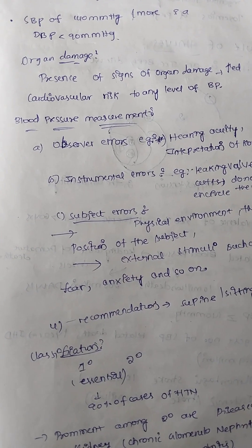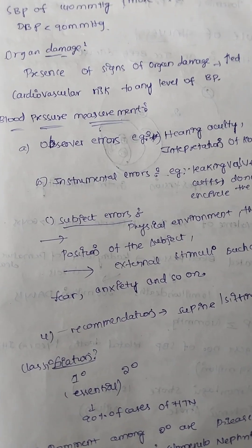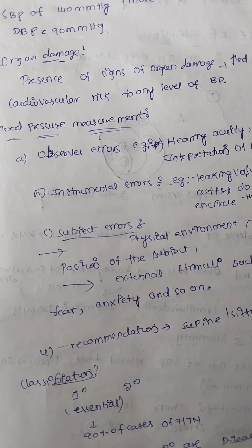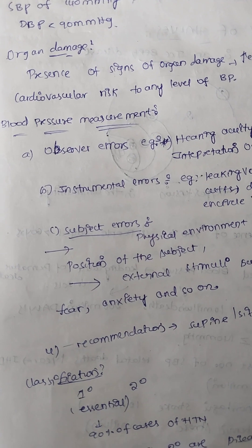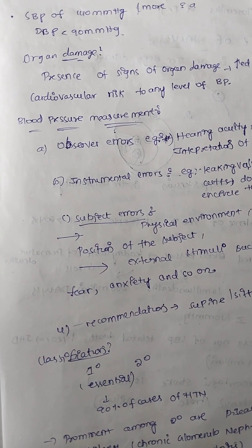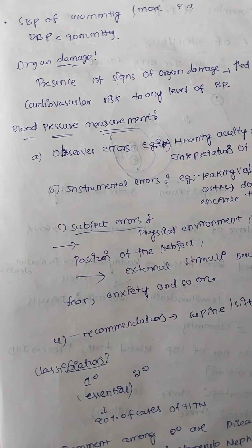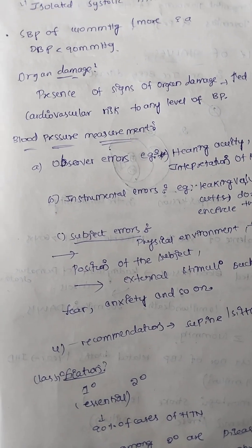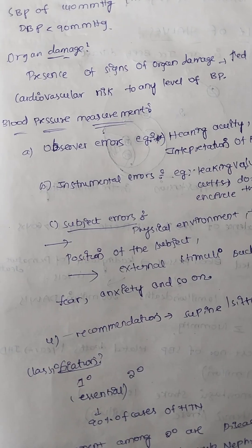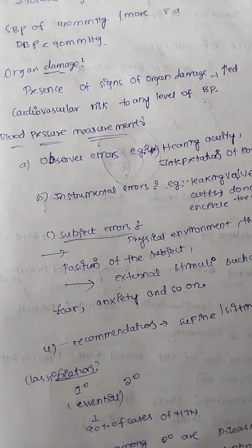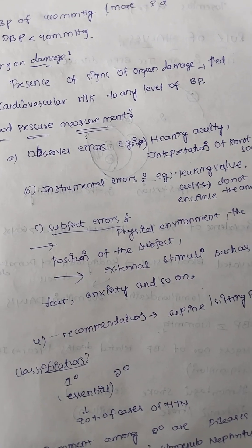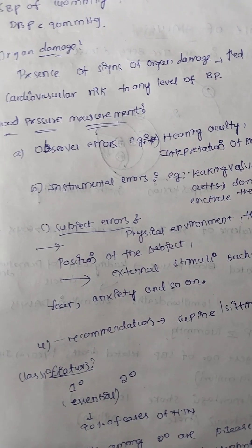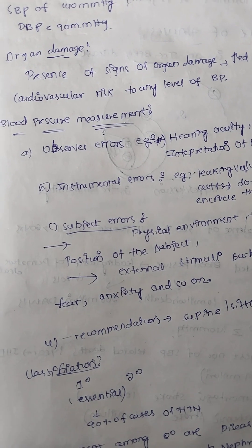Does hypertension cause organ damage? Yes, it causes organ damage. The presence of any signs of organ damage increases cardiovascular risk at any level of BP. Blood pressure is measured using a sphygmomanometer. We have digital and manual measures. In manual measures, observer errors may occur — such as hearing acuity and interpretation of Korotkoff sounds. You may not hear the Korotkoff sounds properly, so there may be errors in measurement.